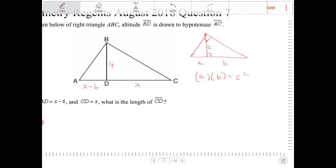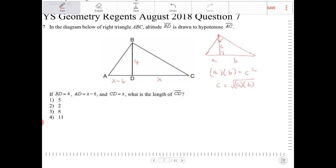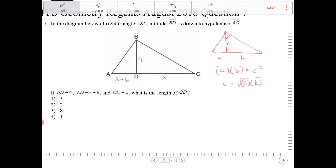We refer to the length of the altitude, C, as the geometric mean between the partitions A and B. So we're going to use this information to help us out in figuring out what is the length of CD here.